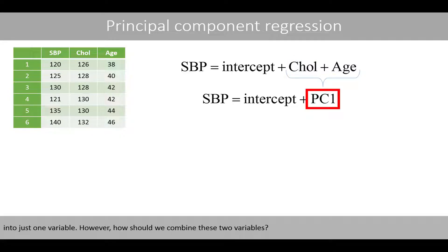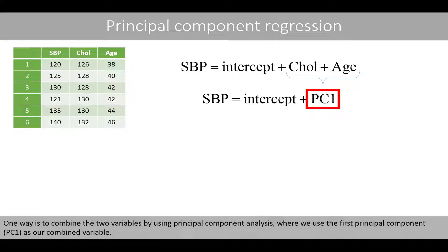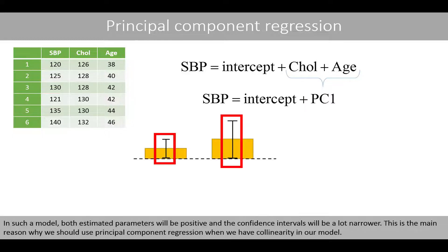How should we combine these two variables? One way is to use principal component analysis, where we use the first principal component, PC1, as our combined variable. In such a model, both estimated parameters will be positive and the confidence intervals will be much narrower. This is the main reason why we should use principal component regression when we have collinearity in our model.